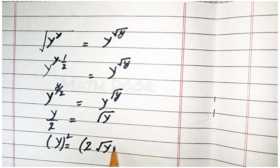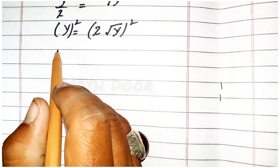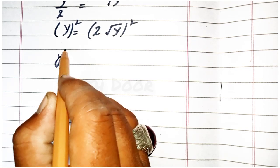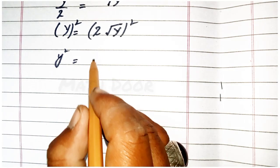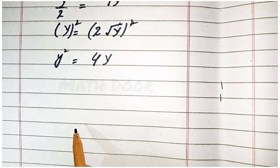We take square on both side, this becomes y square is equal to 4y because this square will cancel by square root.